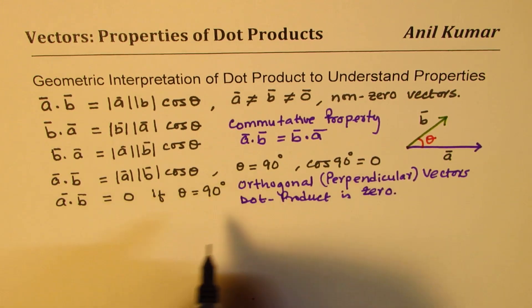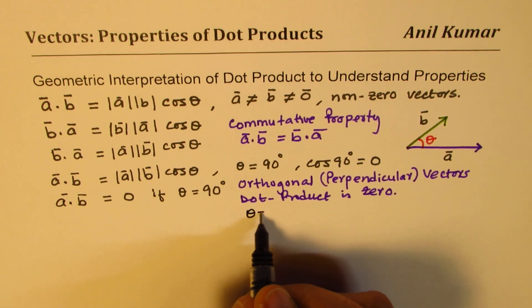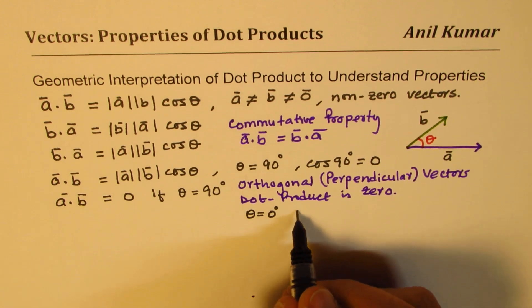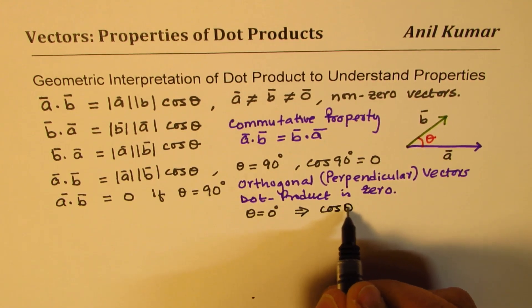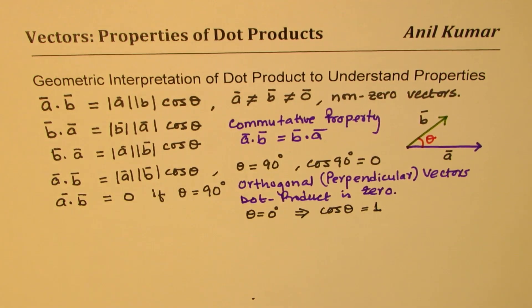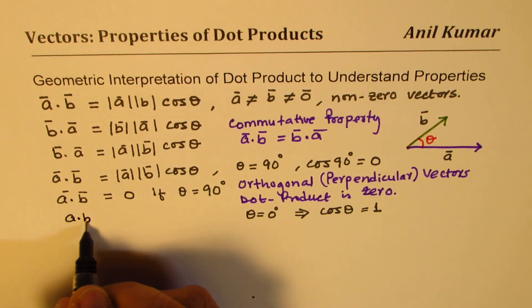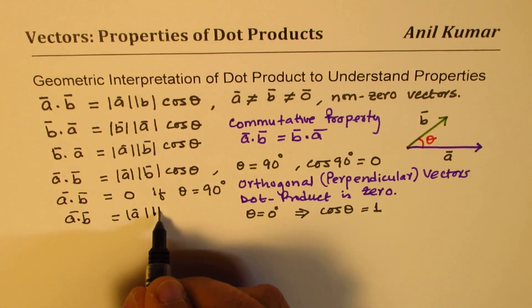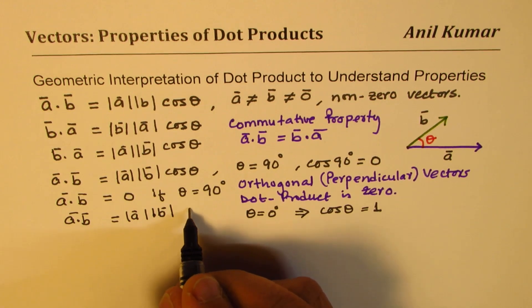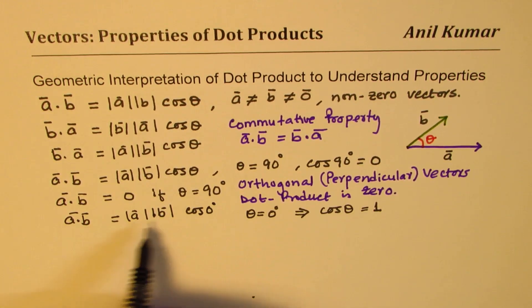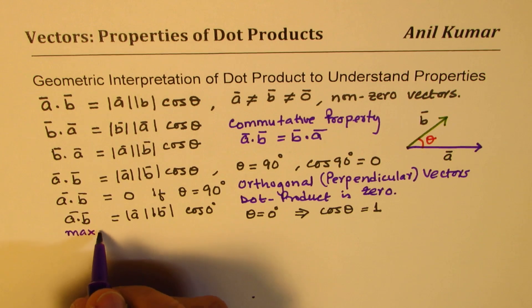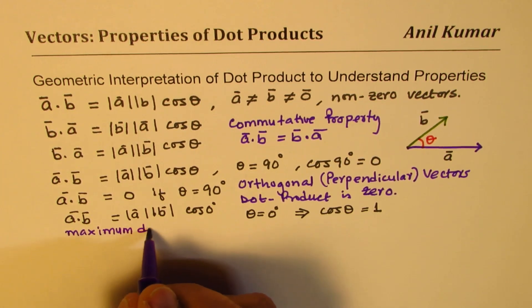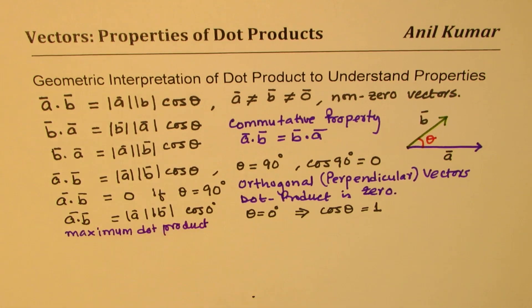Now let's look at the case when theta equals zero degrees. If theta is zero degrees, then cosθ equals one. So a·b will equal the magnitude of a times the magnitude of b — that actually results in the maximum dot product.